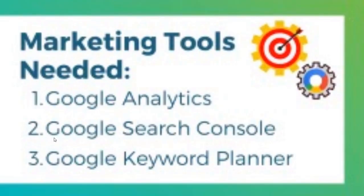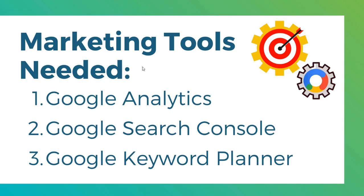We're going to need three tools to do this: Google Analytics, Google Search Console, and the Google Keyword Planner — all completely free, so just create a Google account if you haven't already. Make sure you have Google Analytics and Google Search Console installed on your website. The Google Keyword Planner is available for free through your Google Ads account. Even if you're not running ads you can still use it — it's just not going to give you as much data, but it's a completely free keyword research tool.